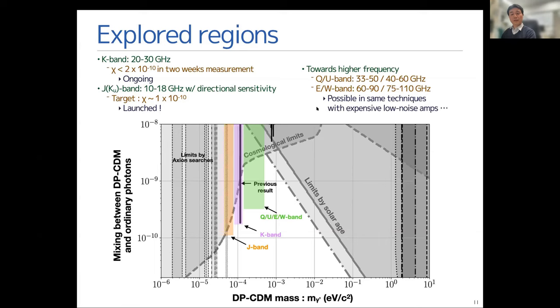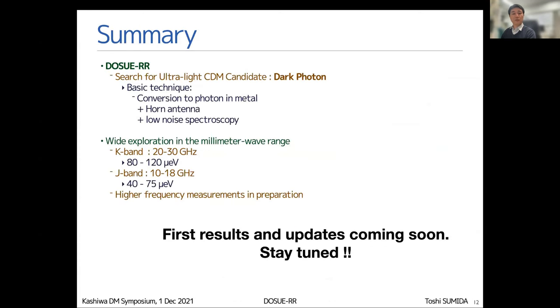The low noise amplifiers would be expensive for this higher frequency. If the budget allows, we'll move on to these regions. Let me summarize the talk. DOSWE is an experiment to search for the dark photon as ultralight cold dark matter with a very simple technique, but very powerful for searching the dark photon.